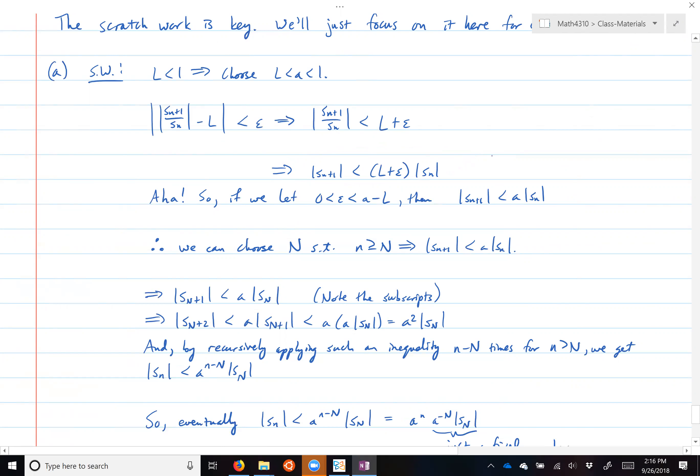So this tells you what maybe you should choose your epsilon, what you should let epsilon be. If you restrict epsilon from above to be A minus L, which is greater than zero because A is greater than L.